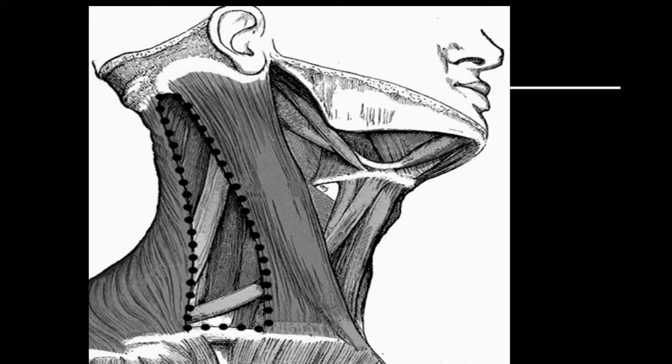The floor is formed by semispinalis capitis, splenius capitis, levator scapulae, and scalenus medius. We can see the 11th cranial nerve, the spinal accessory nerve, passes downward and backward just above the floor.